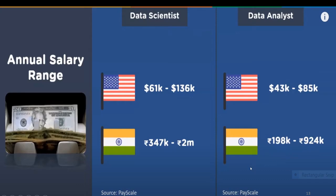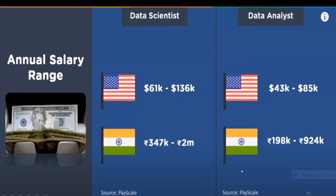So this is the salary package for data scientists and data analysts in the US and in India. As you can see here, companies like American Express offer these salary packages based on skill sets like Java, Python, and Hadoop. I hope you like my video, thank you.